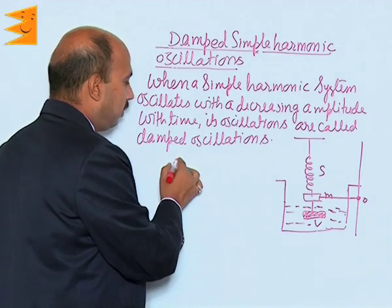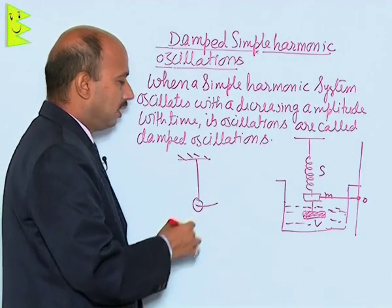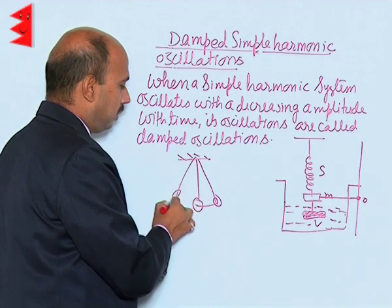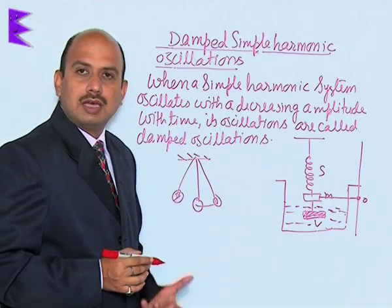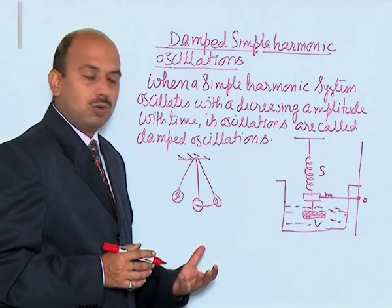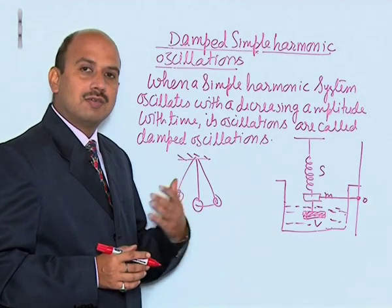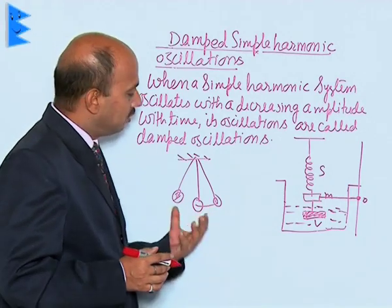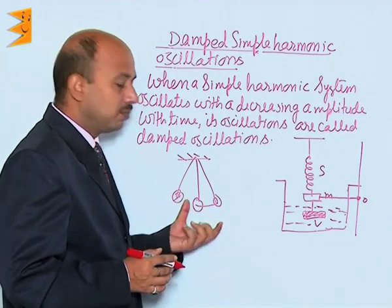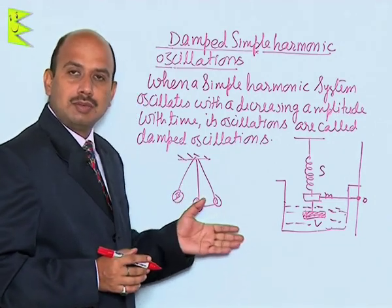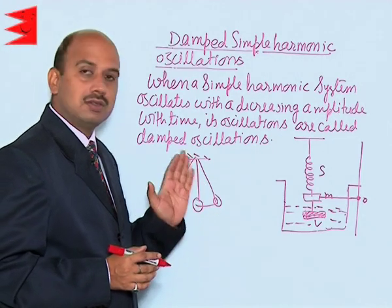A simple example: take a simple pendulum, oscillate it with some amplitude and leave it. After some time it will come to rest. The reason is friction from the air — the energy of the system keeps on decreasing, getting converted into another form due to friction. Energy is utilized to work against friction, so the system's amplitude keeps on decreasing with time and ultimately the system comes to a halt.